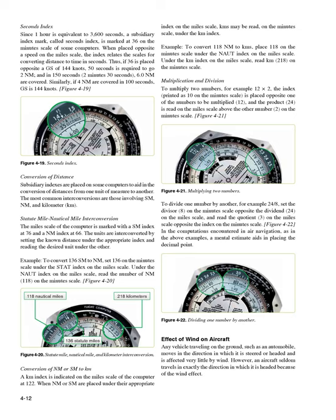Conversion of nm or sm to km: a km index is indicated on the mile scale at 122. When nm or sm are placed under their appropriate index on the mile scale, kilometers may be read on the minute scale under the km index. Example: to convert 118 nautical miles to kilometers, place 118 on the minute scale under the naut index on the mile scale. Under the km index on the mile scale, read 218 km on the minute scale.